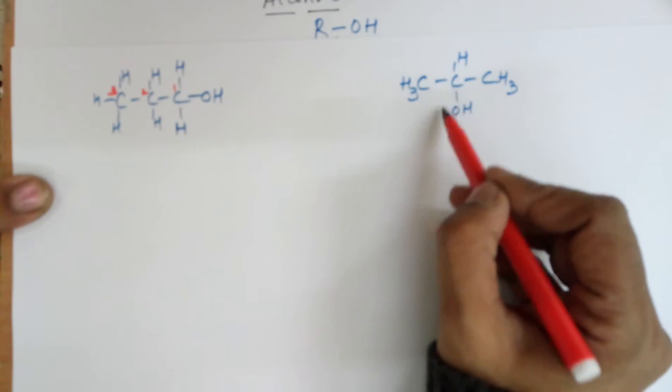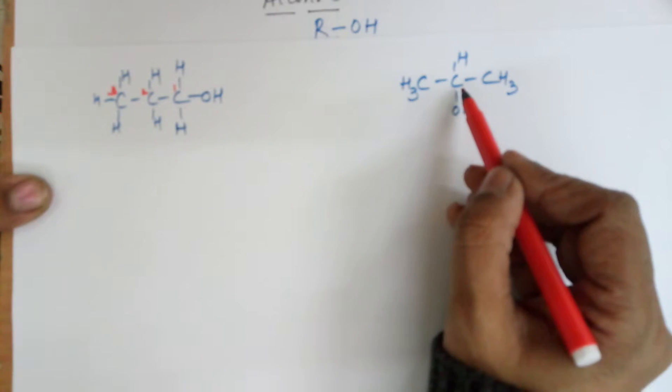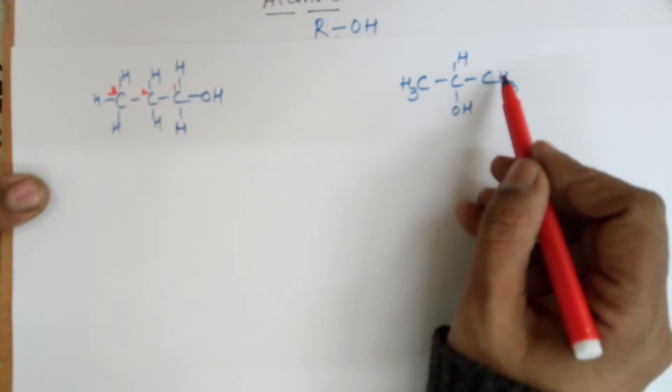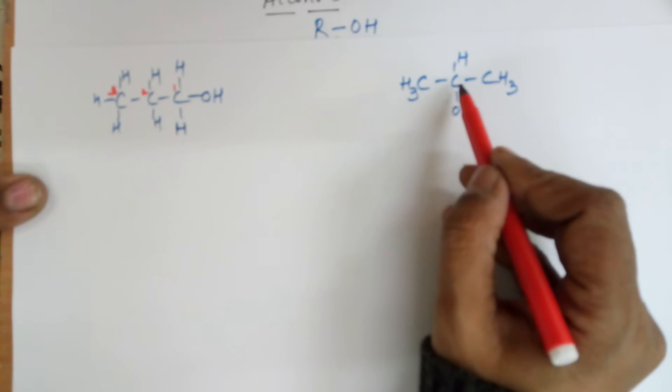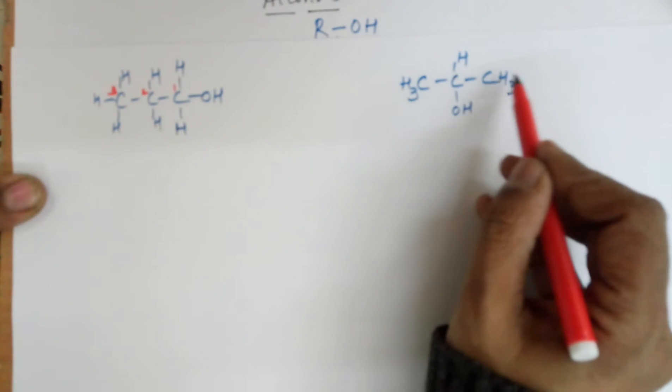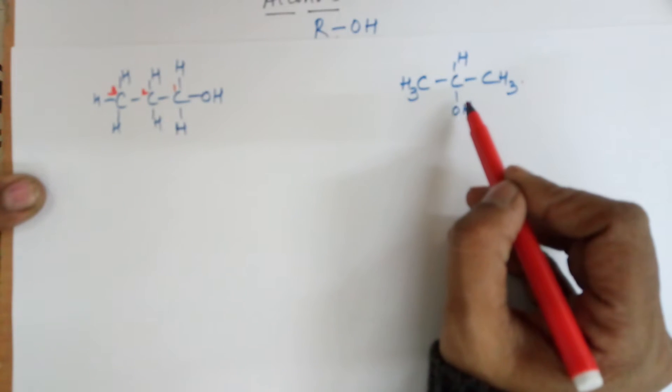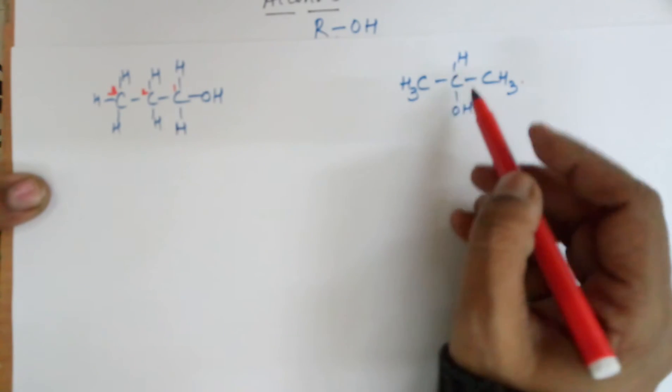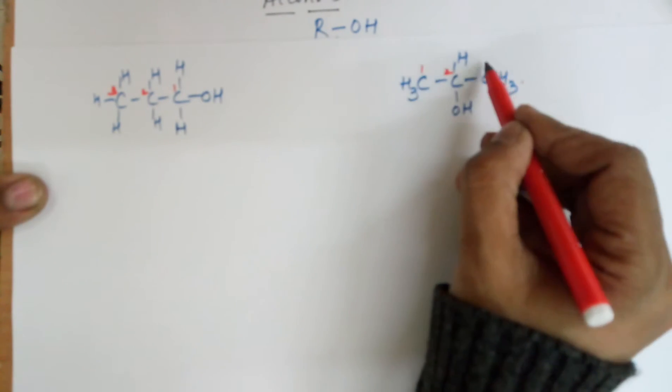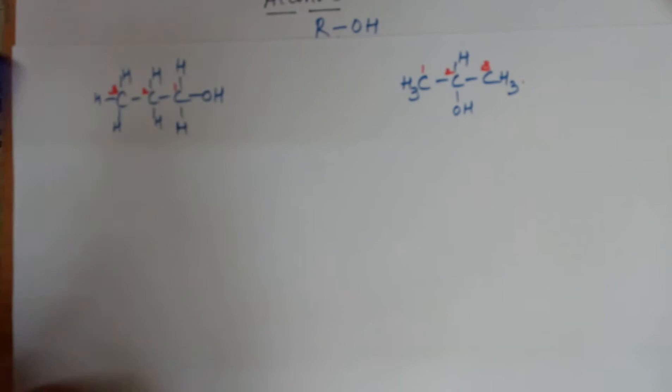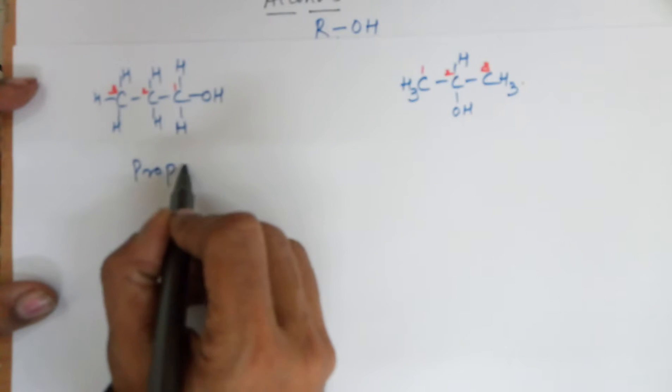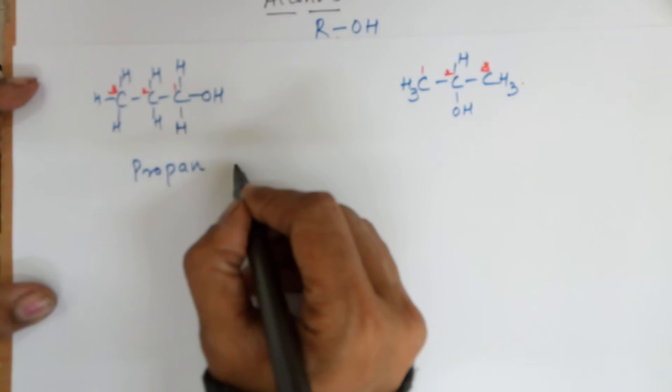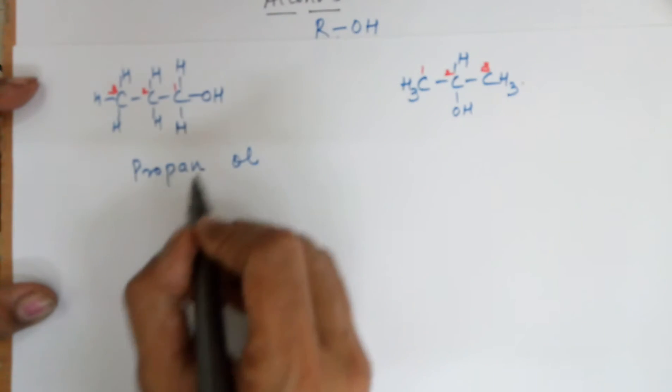Whereas in this case, if I need to number them up, the carbon having OH should be there in the chain but the numbering will have to be from one end to get the longest chain. If I number it from here, the OH carbon gets the second number. If I number it from here, the OH carbon again gets the second number, so you can number it from any side.